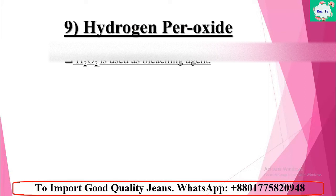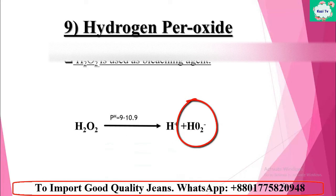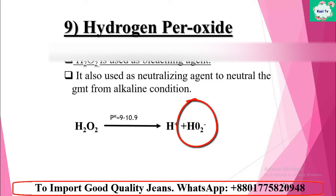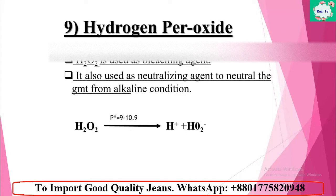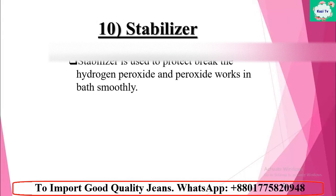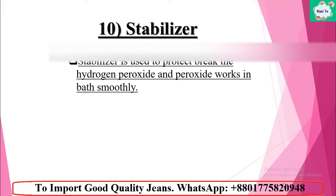Number nine: hydrogen peroxide. Hydrogen peroxide is used as a bleaching agent in an alkaline medium. It breaks down and gives perhydroxyl ions which discolor the color materials, developing a fading effect. It is also used as a neutralizing agent to neutralize garments from an alkaline condition. Number ten: stabilizer. Stabilizer is used to prevent hydrogen peroxide from breaking down prematurely so that the peroxide works smoothly in the bath. Sodium hydroxide acid is used as a stabilizer.